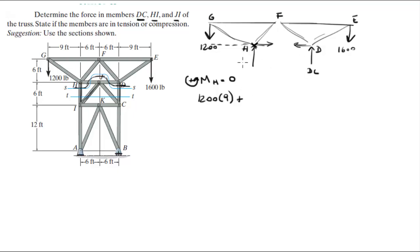This is force DC and this is force HI. So DC times the distance from H to D, which will be 12 - 6 plus 6 is 12 right here - minus the 1600 pound force which creates a clockwise moment of 1600 times 15, and all of this has to be equal to zero.